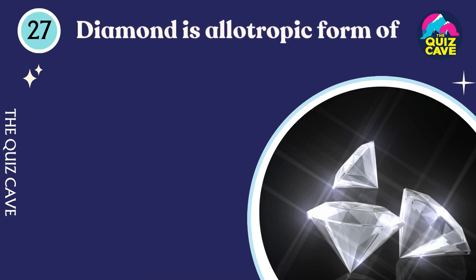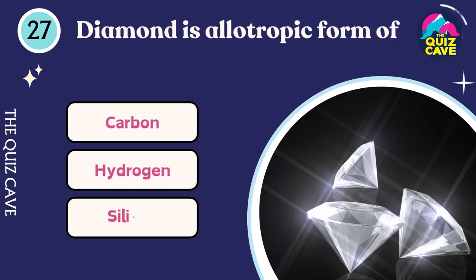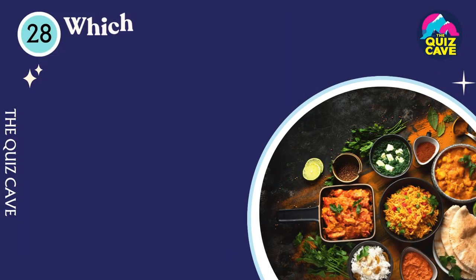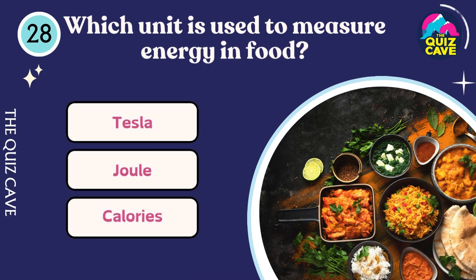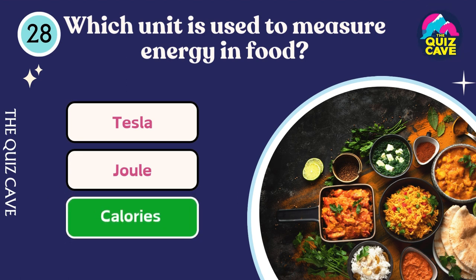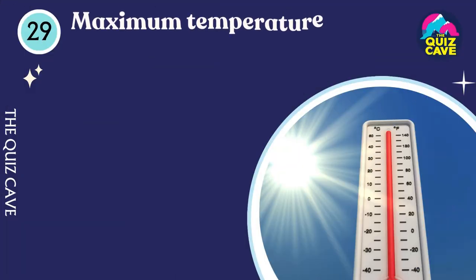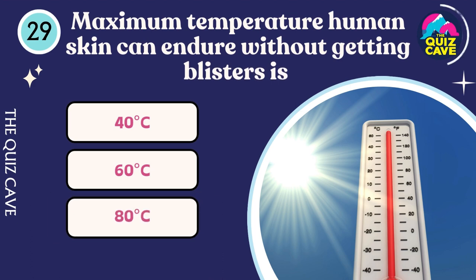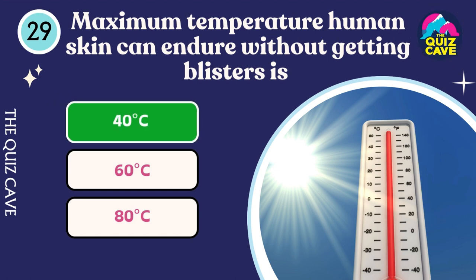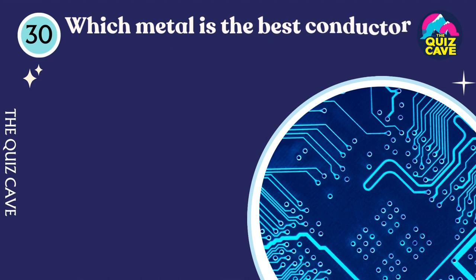Diamond is an allotropic form of carbon. The unit used to measure energy in food is calories. The maximum temperature human skin can endure without getting blisters is 40 degrees Celsius. What metal is the best conductor of electricity? Silver.